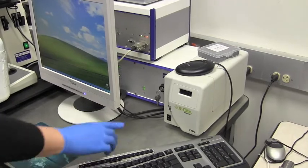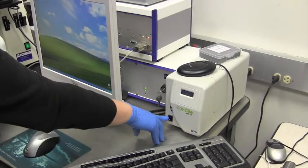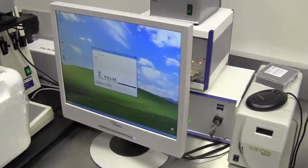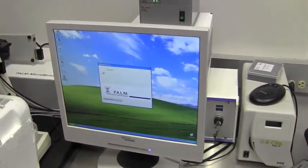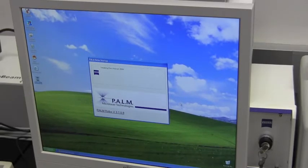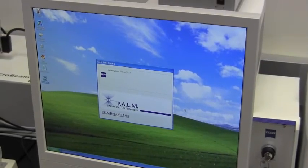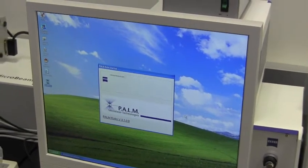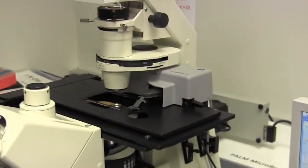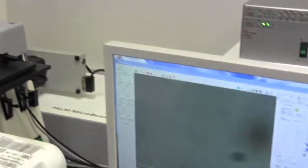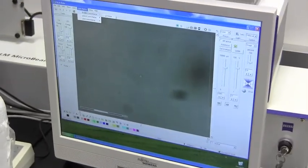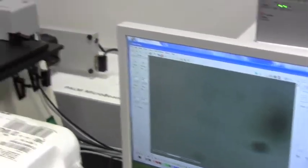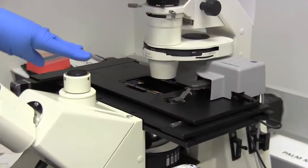For imaging, we'll be using this transmitted light, which you should turn on before you start. You start the Palm Robo system. The microscope will initialize and the objective will lower. And then it will lower again for the stage to move.